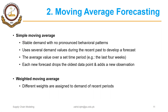Simple moving average is used when we have stable demand with no pronounced behavioral patterns. This method uses several demand values during the recent past to develop a forecast. The average value over a set time period — for example the last three or four weeks or months — is used. Each new forecast drops the oldest data point and adds a new observation, which is why it is called the simple moving average method.